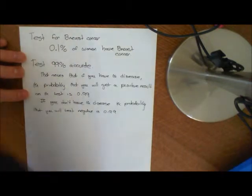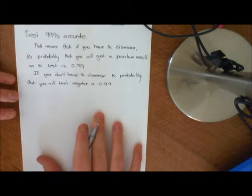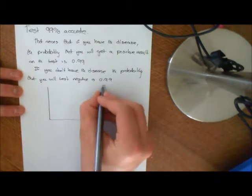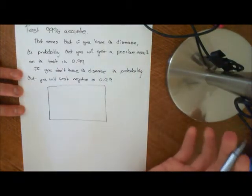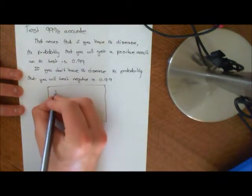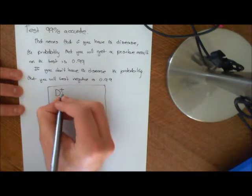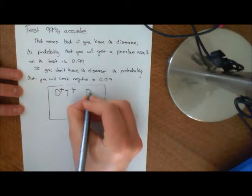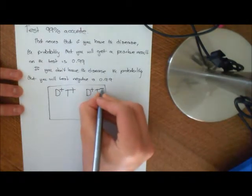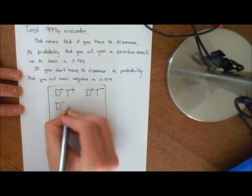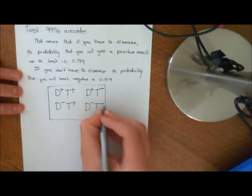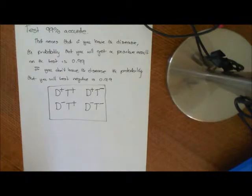So let's draw our sample space. What are the outcomes? If I have a patient that comes in and I'm going to screen them, what are the possible outcomes? Well, firstly they could have the disease and the test could be positive — they come in with the disease and the test tells them they have it. Or they could have the disease and the test tells them they don't have the disease. Or they could not have the disease and the test tells them they do. Or they could not have the disease and the test tells them they don't. Those are the four outcomes within our sample space.